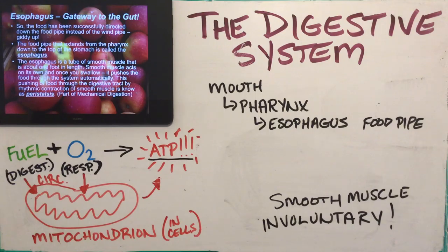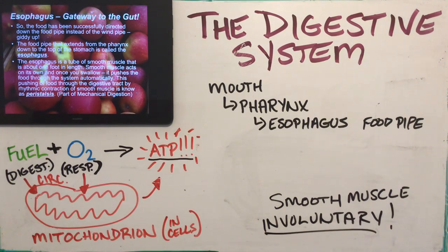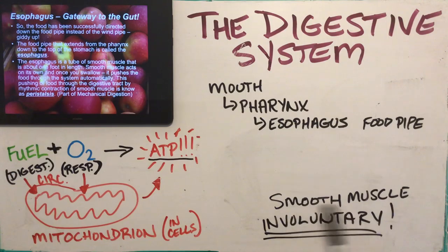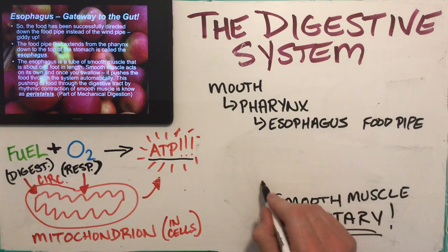Smooth muscle makes up the esophagus, stomach, intestines, and rectum. It is involuntary — the brain looks after it. That's why once you swallow food, you don't have to think 'okay, food go down through my chest into the stomach.' The body takes over automatically. The circular and longitudinal muscle are types of smooth muscle that our body looks after. The rhythmic contraction of waves that push food through the entire tube is called peristalsis.